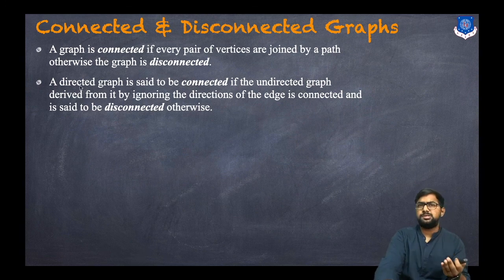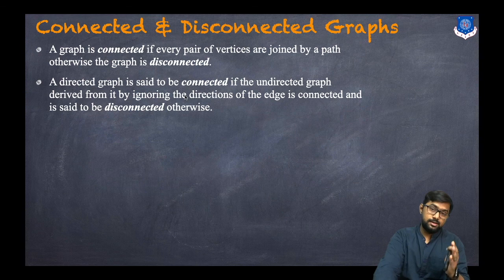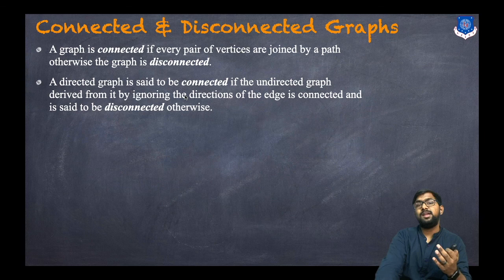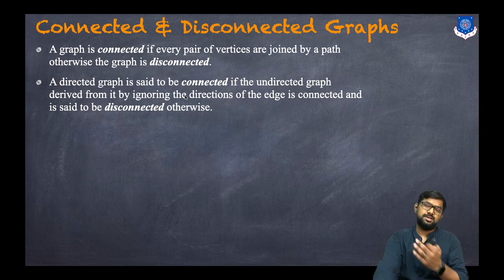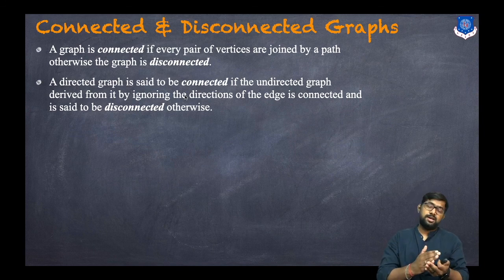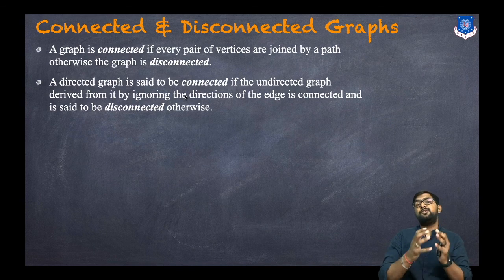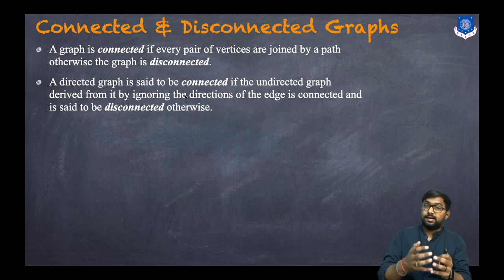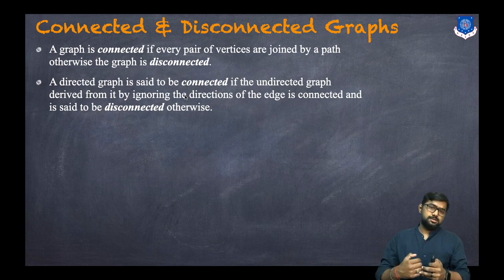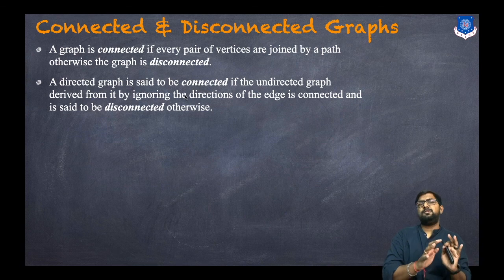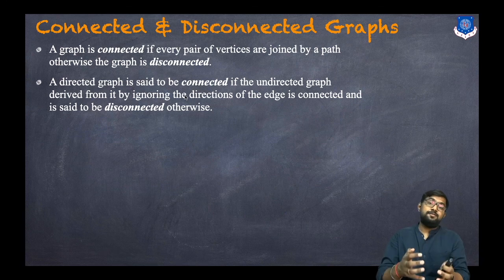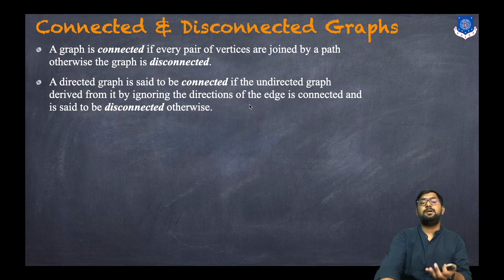Now for a directed graph or digraph: a directed graph is said to be connected if the undirected graph derived from it by ignoring the directions of the edges is connected, and it is said to be disconnected otherwise. So a directed graph is connected when, if we ignore the directions and the resulting graph is connected, then we say the directed graph is connected.